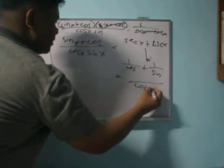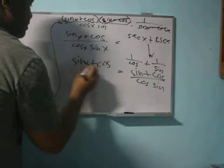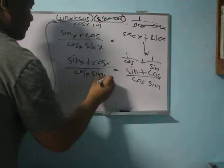Adding these fractions gives us (sin x + cos x) / (cos x sin x), which matches our result from the left side.